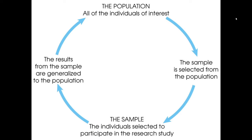From the population — all of the individuals of interest — a sample is selected. The individuals are selected to participate in a research study, and results from the sample are generalized back to the population. It is a cycle which keeps on repeating.